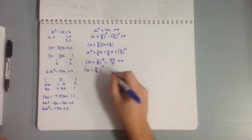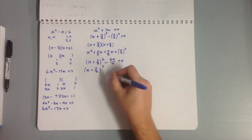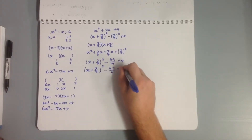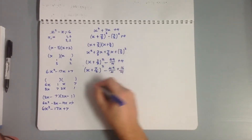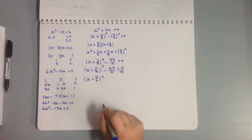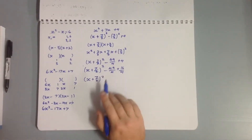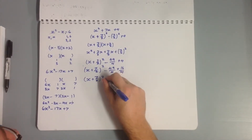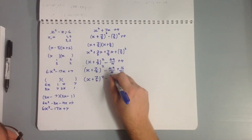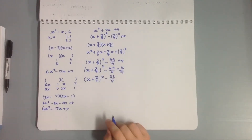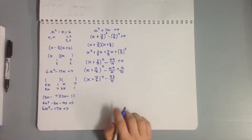Simplifying: we have (x + 7/2)² - 49/4 + 16/4, which gives (x + 7/2)² + (-49 + 16)/4 = (x + 7/2)² - 33/4. And we're done — that's our completing the square result.